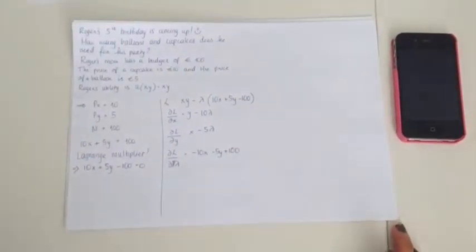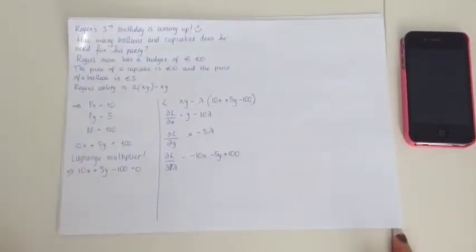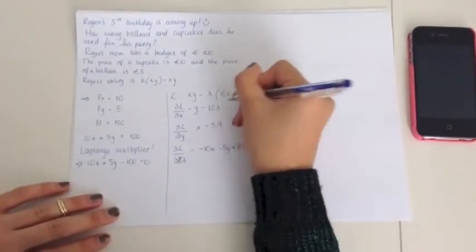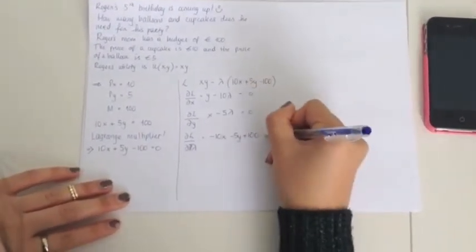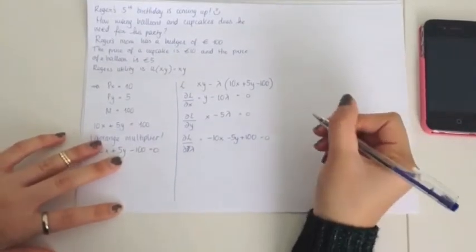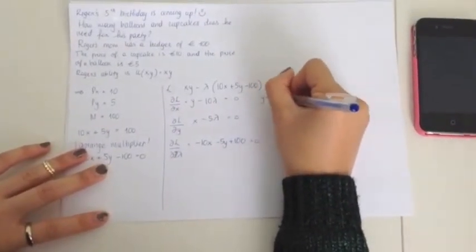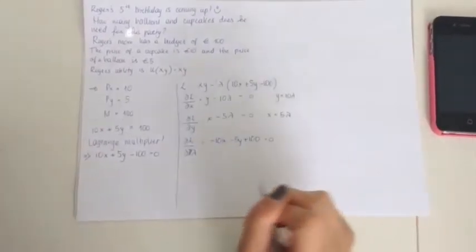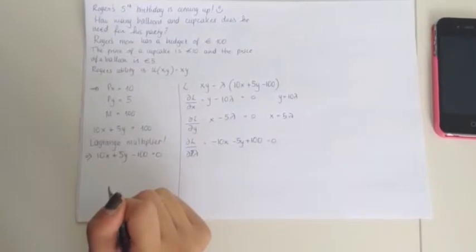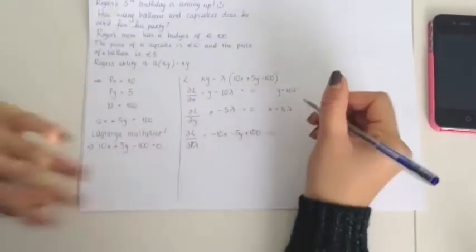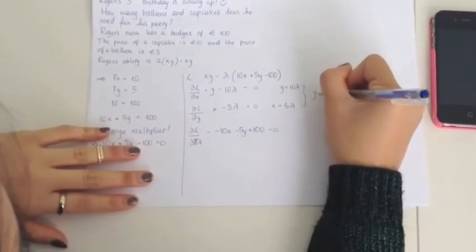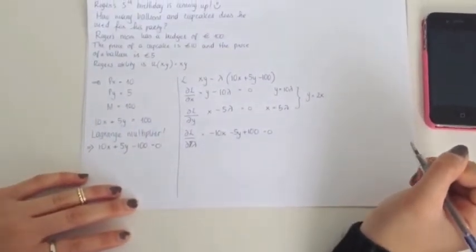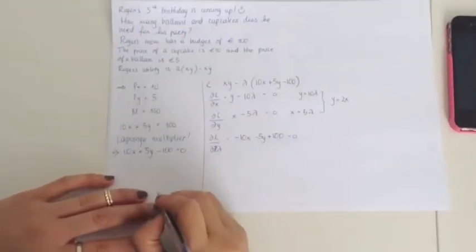Now, to find out how much of good X and Y we will actually need, we need to first set each partial derivative equal to zero. And then we set X and Y in terms of lambda. So you can then say Y equals 10 lambda and X equals 5 lambda. From here you can see that Y will then be equal to 2X. We then can plug this back into our final partial derivative, the one according to lambda.